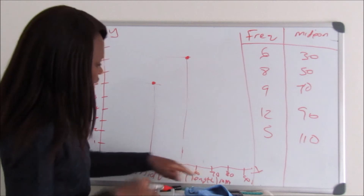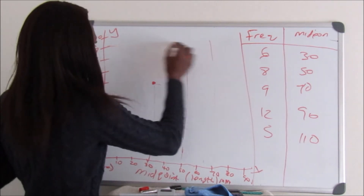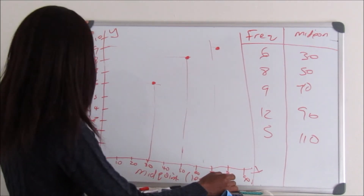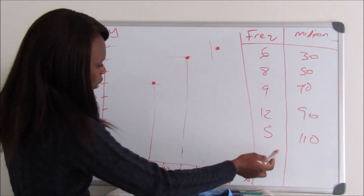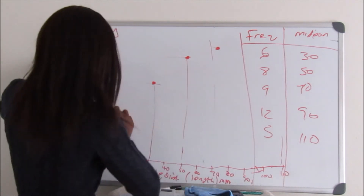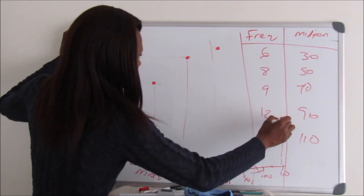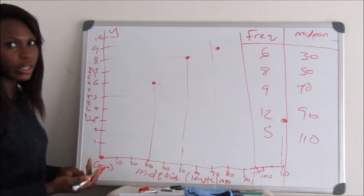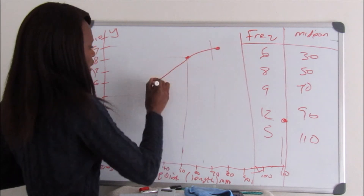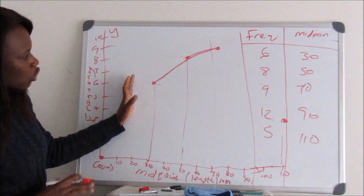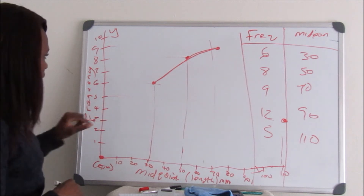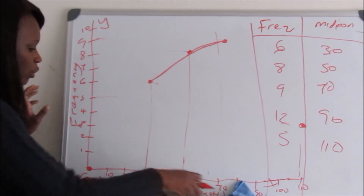We also have point (90, 12) — we can't fit 12 on this scale — and point (110, 5). This is just a rough sketch to show how the frequency polygon will look when drawn to scale. The graph is not drawn to scale here.